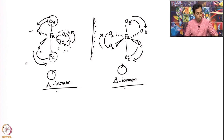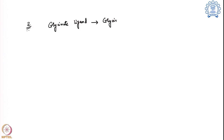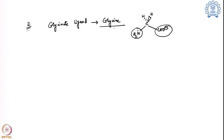Now we look at a different variant — example 2 — using glycinate as a ligand. Glycinate comes from the natural amino acid glycine, whose structure is CH2 with a carboxylate group and an amino group. Glycine binds through the amino group (nitrogen) and the carboxylate (oxygen), so it also acts as a bidentate ligand. The subtle difference here is that the two coordination atoms are not the same: one is nitrogen and one is oxygen.